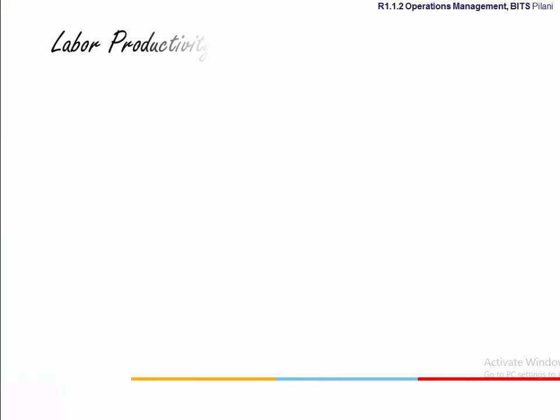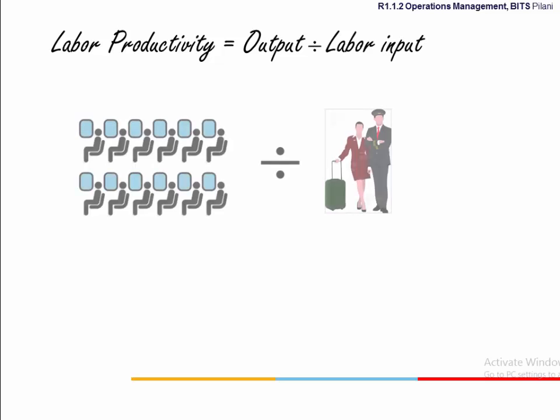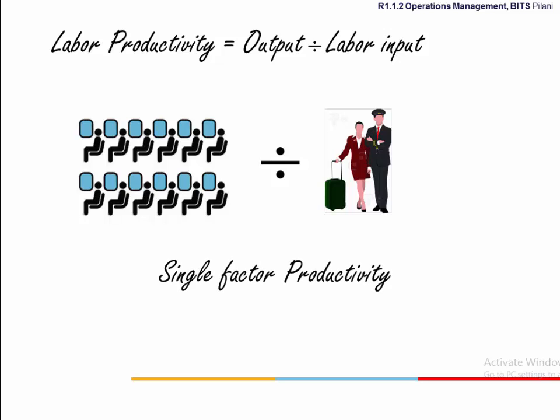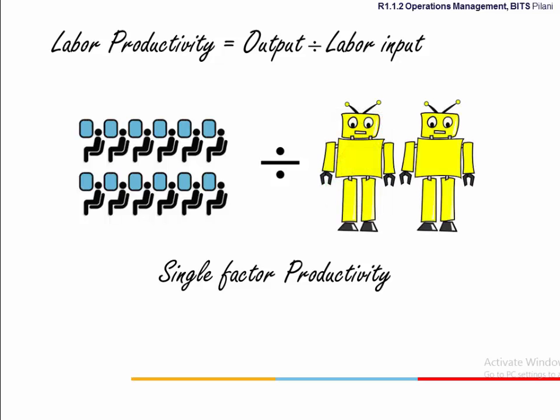The most popular input considered for computing productivity is labor. Number of staff needed to fly 1,000 guests in a day can be a productivity measure for an airline. This is also known as single factor productivity, as it considers just one input factor — labor.